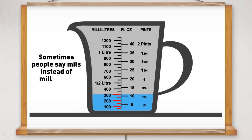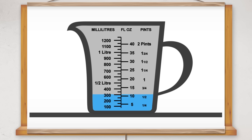Sometimes people say mils instead of millilitres. This is fine. Not all the divisions are labelled on measuring containers. If divisions are not labelled, you may sometimes need to estimate the amount.